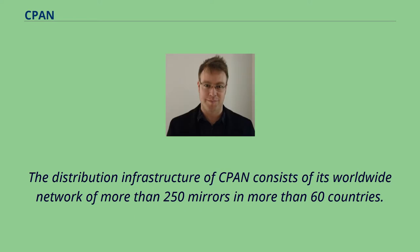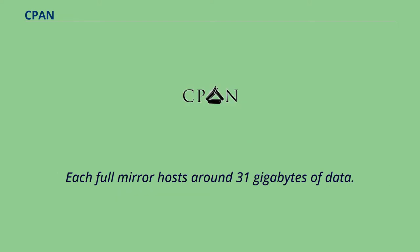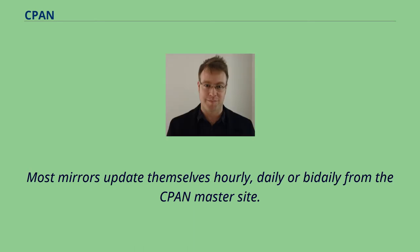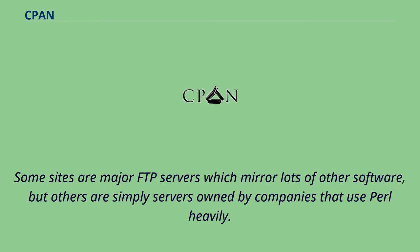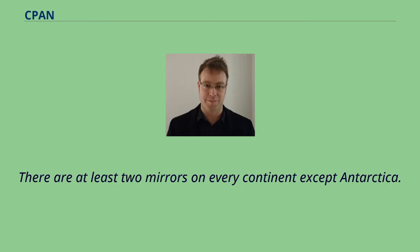The distribution infrastructure of CPAN consists of its worldwide network of more than 250 mirrors in more than 60 countries. Each full mirror hosts around 31GB of data. Most mirrors update themselves hourly, daily, or bi-daily from the CPAN master site. Some sites are major FTP servers which mirror lots of other software, but others are simply servers owned by companies that use Perl heavily. There are at least two mirrors on every continent except Antarctica.